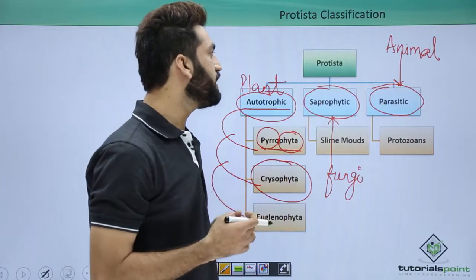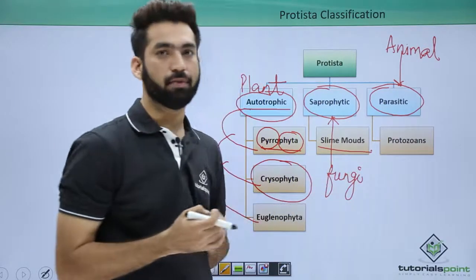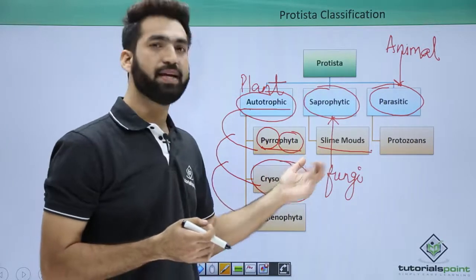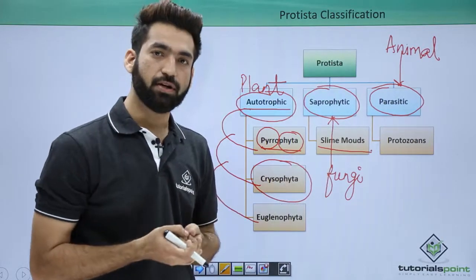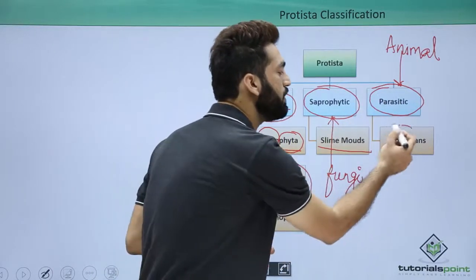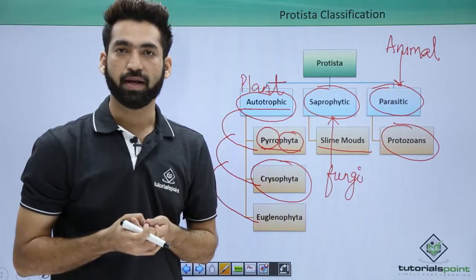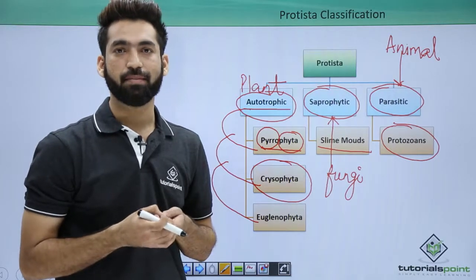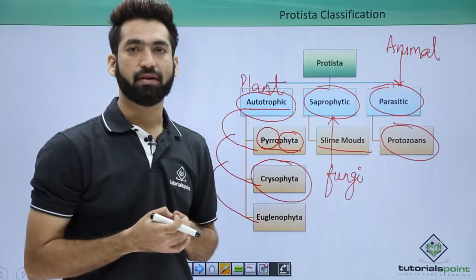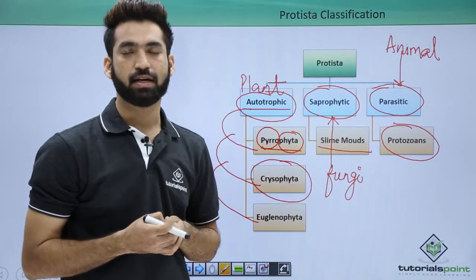When you talk about saprophytic Protista members, we will be talking about slime molds, which behave like fungi. There can be acellular slime molds and cellular slime molds. Finally, in the parasitic group, we will be talking about protozoa — like Plasmodium, Amoeba, and Paramecium — all these protozoans come under parasitic Protista members.